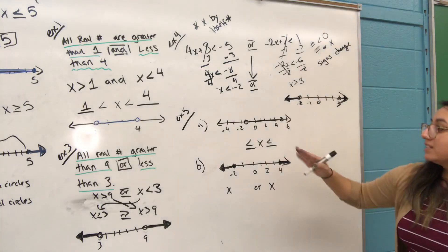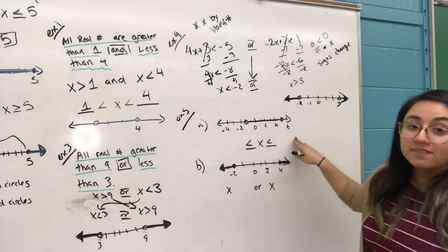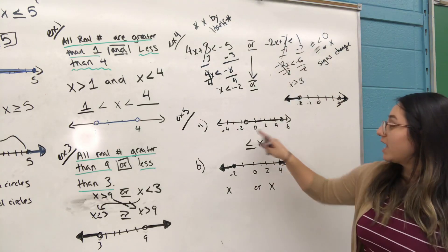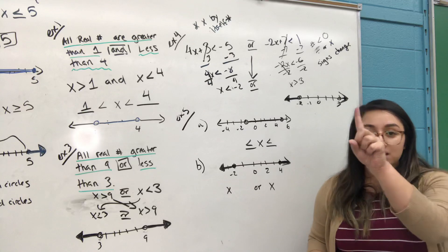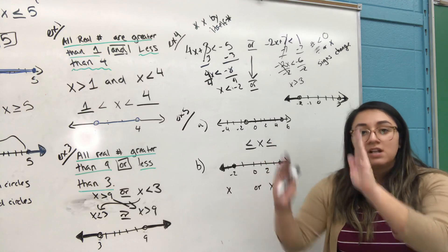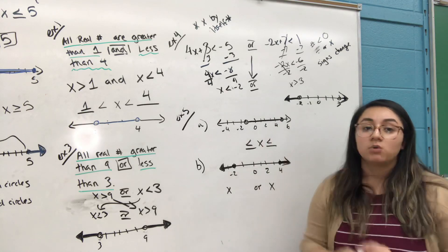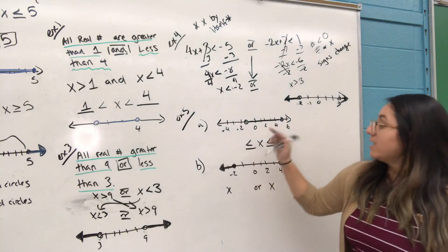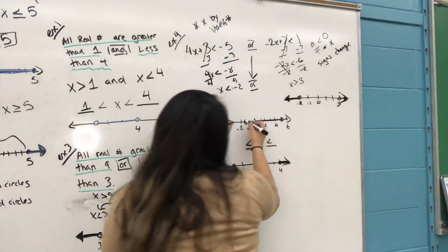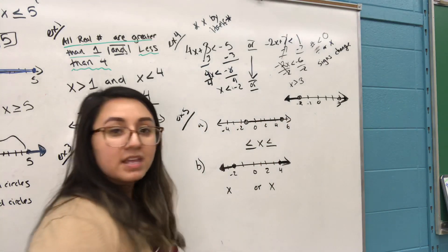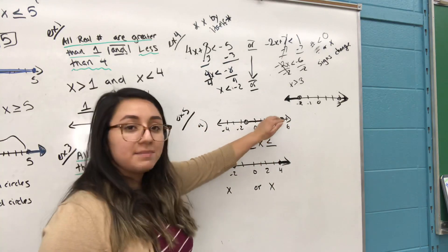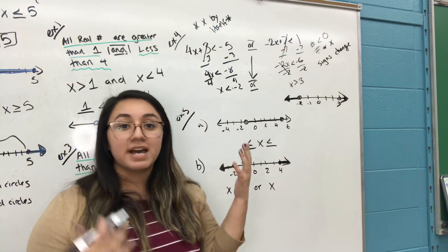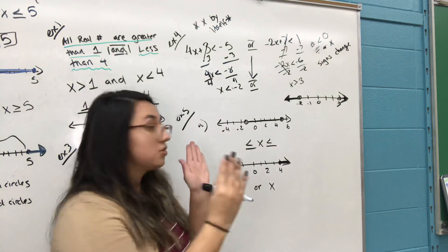Last part is you're going to have a graph and they want you to write an inequality. Here we have two types of inequality: the and inequality, that's one main one, or the or inequality. That means you have two separate inequalities with the word or. First one, we have a graph. It looks like there's a circle here, there's a circle here. There's a line in between. That means that should tell me that it's my and inequality, meaning it's two combined ones.